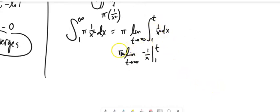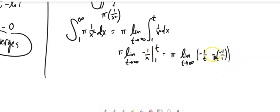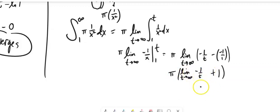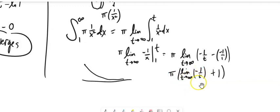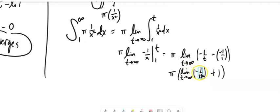So then I have pi times the limit as t approaches infinity of negative 1 over t minus negative 1 over 1. Evaluate those — plug in t, subtract plug in 1 — and this is just plus 1. I've still got pi out here, and I've got the limit as t approaches infinity of negative 1 over t. As t gets really big, negative 1 over t goes to 0 — 1 over 1 million, 1 over 1,000 — it's closer and closer to 0. So we have pi times 0 plus 1.